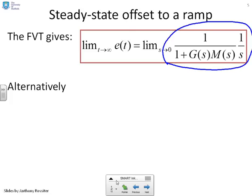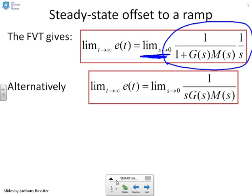We are taking the limit as s goes to 0. This means I can reduce the denominator: s times 1 goes to 0, so that term is removed. But s times g(s)·m(s) is uncertain, so we leave it in. The formula becomes the limit as s goes to 0 of 1 over s·g(s)·m(s). Notice the subtle difference from step offsets: we have an extra s in the denominator and have removed the 1.